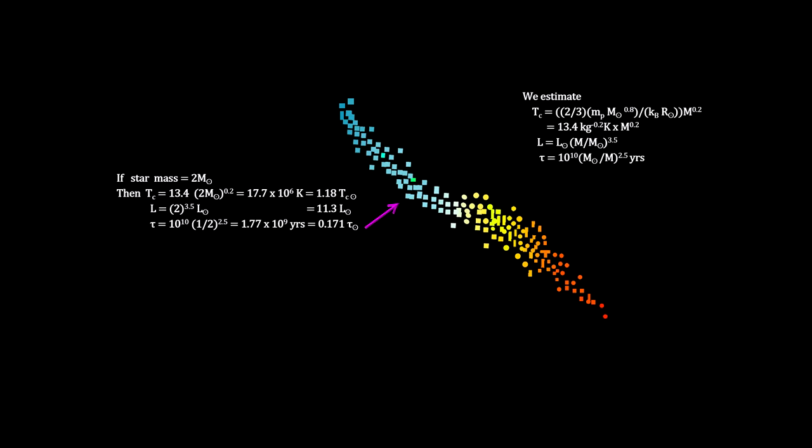For example, stars twice the mass of the sun have over 10 times the luminosity and burn out in under 2 billion years. In the other direction, we see that stars with half the mass of the sun have less than a tenth of the luminosity and remain on the main sequence 5 times longer.